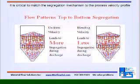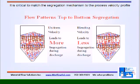The flow pattern must match the segregation profile. For example, if top-to-bottom segregation exists, then a uniform velocity profile will result in extreme segregation. However, if a non-uniform blending profile is used, then mixing of layers reduces segregation.